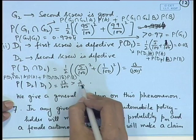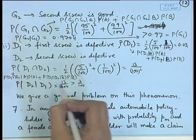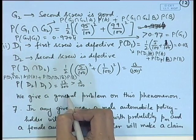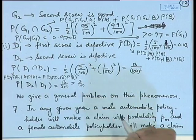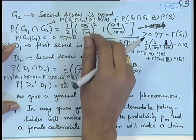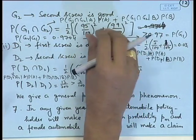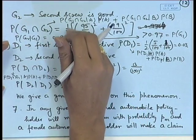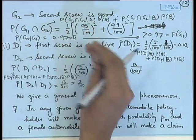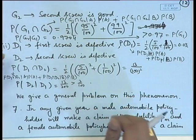Once again you can see that this probability has increased. If the first one is defective, there is more likelihood that the supplier giving more defectives is the one which actually supplied, and therefore the probability increases that the second one is also defective. We can generalize this problem by replacing the specific numbers with abstract expressions between 0 and 1, and the probability of selection from each factory with some alpha — the phenomenon still holds.